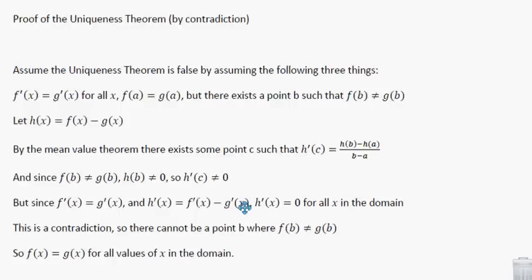We're going to do a quick proof of the uniqueness theorem. We're going to prove this by contradiction. The first step is to assume the uniqueness theorem is false by assuming these three things.